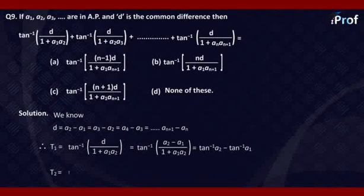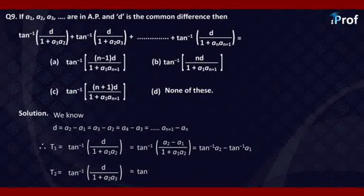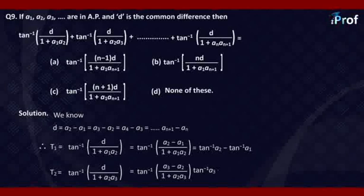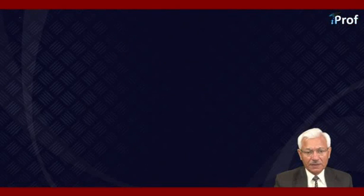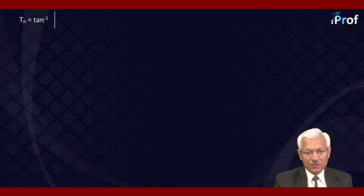Similarly, T2 equals tangent inverse D upon 1 plus A2·A3. Here we use the value of D as A3 minus A2, which becomes tangent inverse (A3 minus A2) upon 1 plus A2·A3, that is equal to tangent inverse A3 minus tangent inverse A2. Similarly, so on, TN equals tangent inverse D upon 1 plus AN·AN+1.